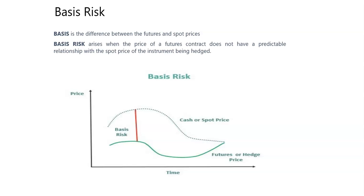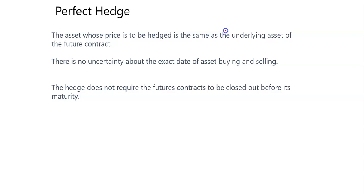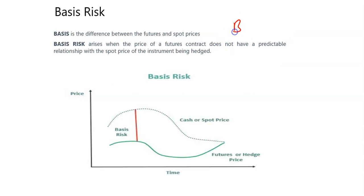Basis is the difference between future price and spot price. For example, if today you buy a future oil contract at $100 but the spot price is $95, the difference between these two is called the basis.